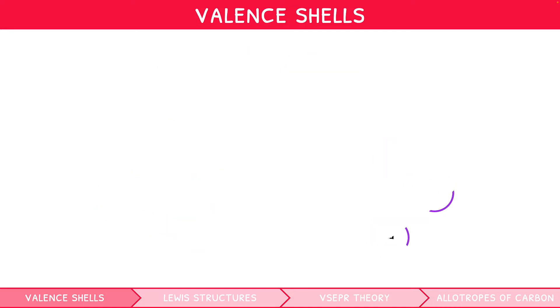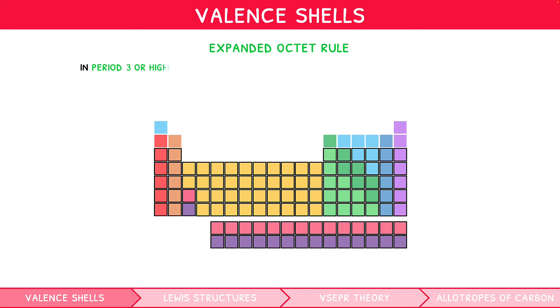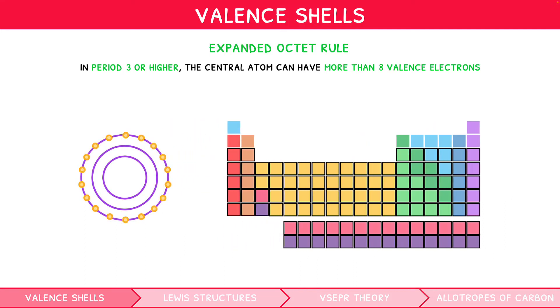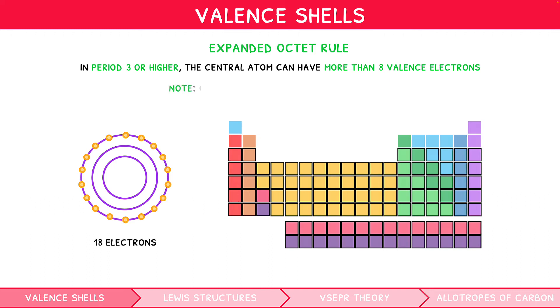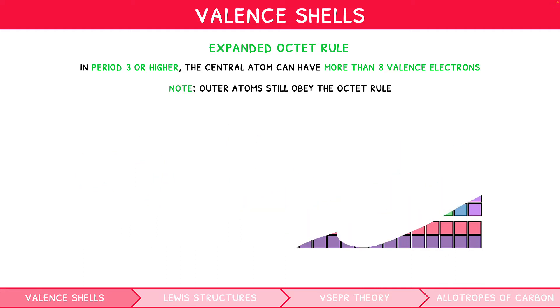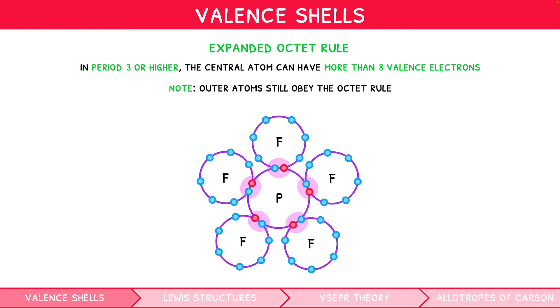An extension to the octet rule is the expanded octet rule. This is that all covalent compounds with a central atom in period 3 or higher can bond so that the central atom will have more than 8 valence electrons. This makes sense since period 3 is the third energy level, so it can have 18 electrons. Note, the outer atoms still obey the octet rule here. For example, the valence electron distribution within PF5 looks like this.